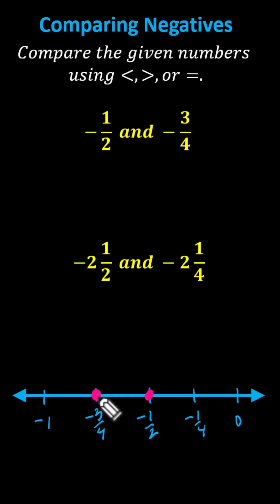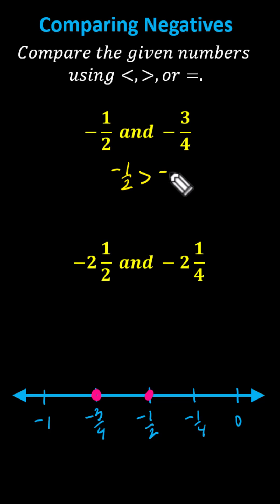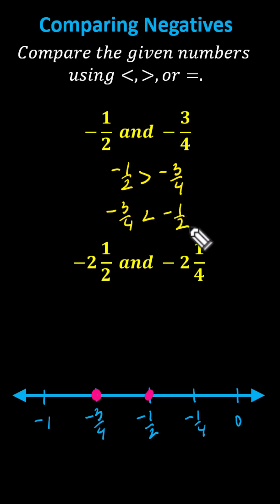By comparing numbers on the number line, the number on the left is always less than the number on the right, or the number on the right is always greater than the number on the left. Because negative one-half is to the right of negative three-fourths, we now know negative one-half is greater than negative three-fourths. We can also state an equivalent inequality: negative three-fourths is less than negative one-half, because negative three-fourths is to the left of negative one-half. Notice for both inequalities, the inequality symbol points toward negative three-fourths and opens toward negative one-half.